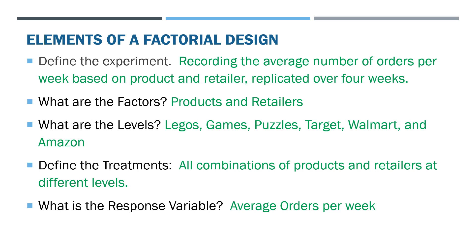The factors are the products and retailers. The levels are the labels: Legos, games, puzzles, Target, Walmart, and Amazon. The treatments would be defined as all combinations of products and retailers at different levels. The response variable is the average orders per week.